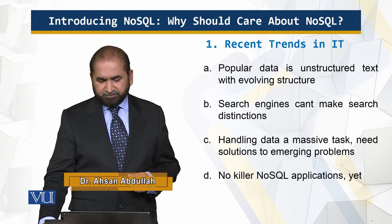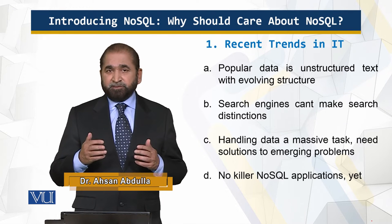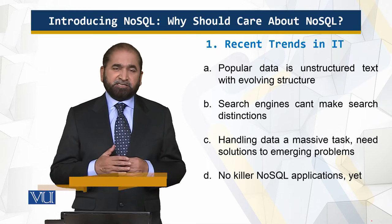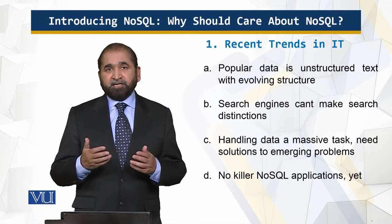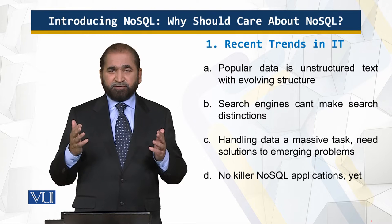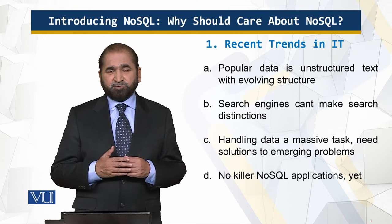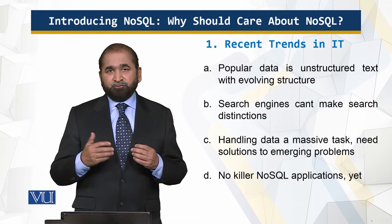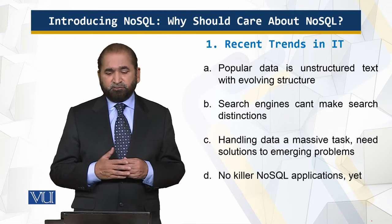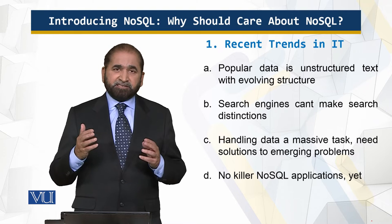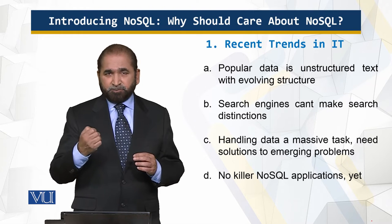So what are the trends? The data being generated today is unstructured. As I have mentioned before, examples include tweets — there is a lot of data behind a tweet which is not visible to users. There are also Facebook posts, and of course email has been around for a while. Search engines can act as per our requirements in certain ways.